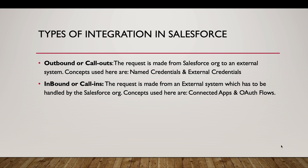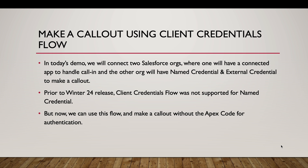The concepts we use for callouts are named credentials and external credentials. For callins or inbound integration, it is a request made from an external system that has to be handled by the Salesforce org, and for that we use concepts like connected apps. In today's demo, we will connect two Salesforce orgs — one will have a connected app to handle the callin, and the other will have named credentials and external credentials configured to make a callout.